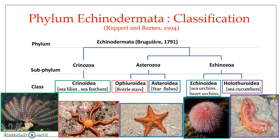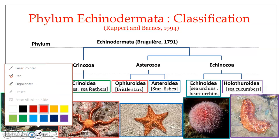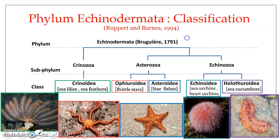The classification we are going to follow is the one outlined by Rupert and Barnes in 1994. Here the phylum Echinodermata was divided into three subphyla: Krinozoa, Astrozoa, and Echinozoa. The subphylum Krinozoa includes the class Crinoidea, which includes the sea lilies and sea feathers.